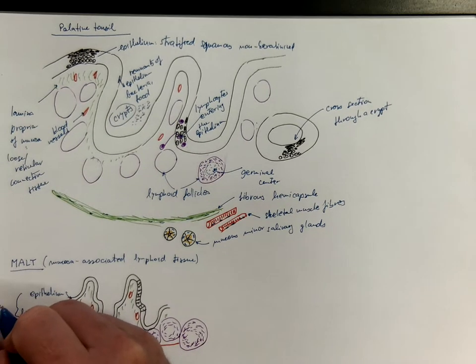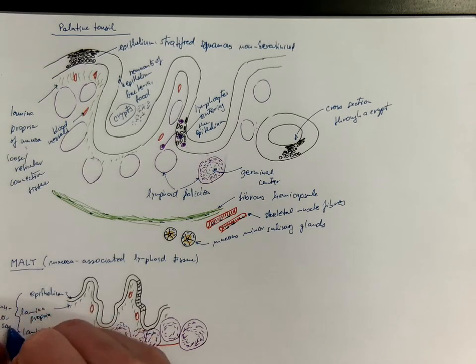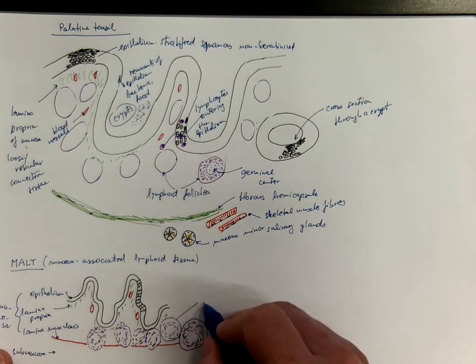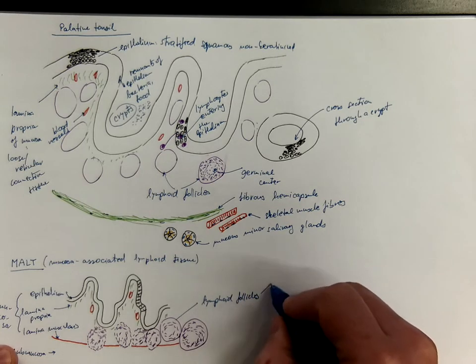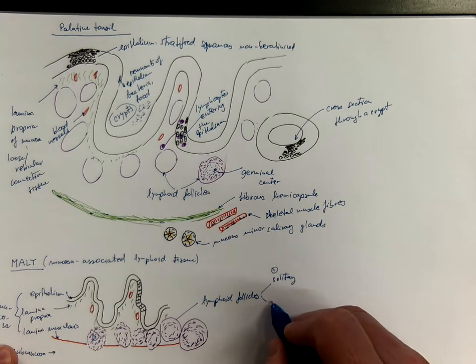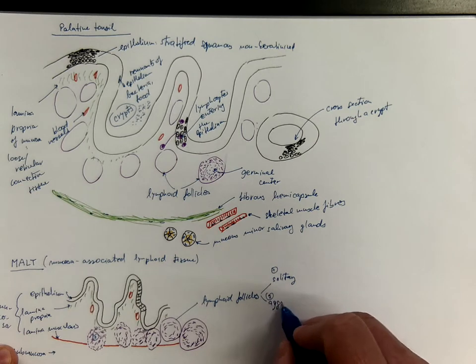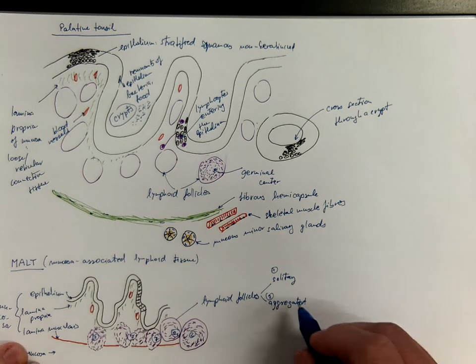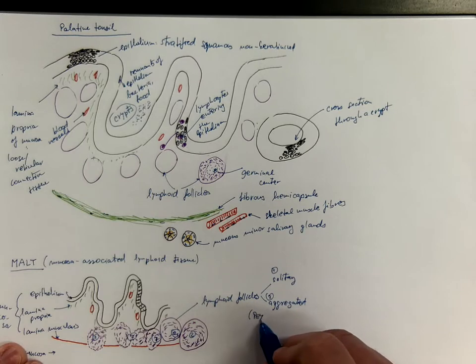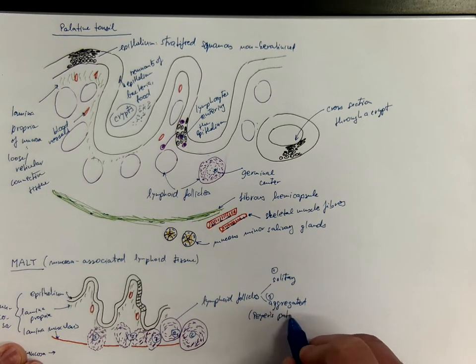All this forms a layer called mucosa and here there will be submucosa, connective tissue. But we got these lymphoid follicles that could be solitary such as this one or aggregated such as this one. A huge field filled with lymphoid follicles. And the aggregated lymphoid follicles are also known as the Peyer's patches.